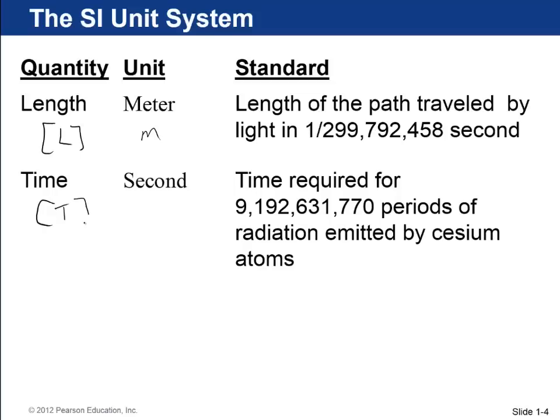Time is another quantity. The SI unit is second, lowercase s, and the second has been defined as the time required for about 9 billion periods of the radiation emitted by a particular transition of cesium atoms, a hyperfine transition.